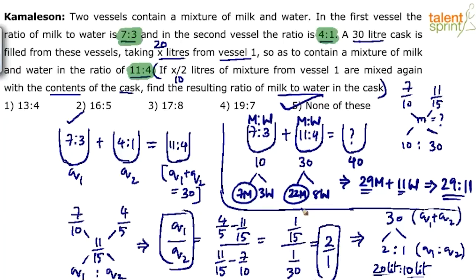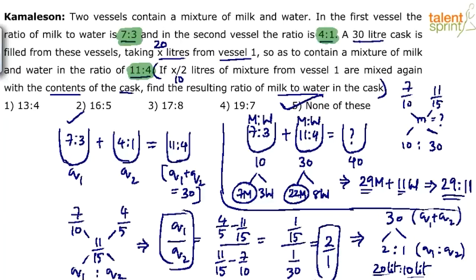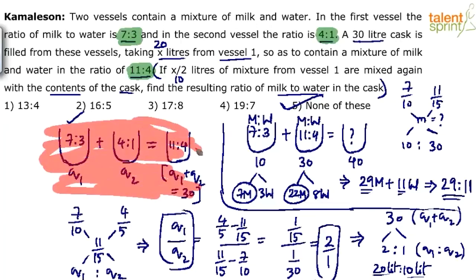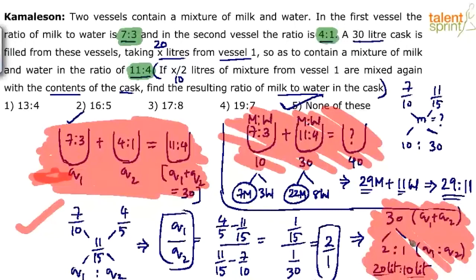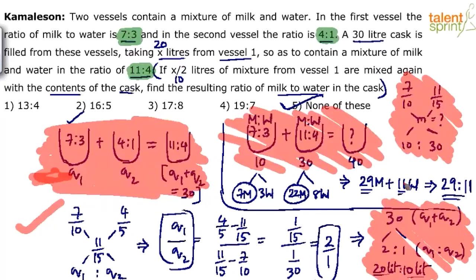The page may look loaded with text but the solution is actually straightforward. Cut down unnecessary steps — you don't need to draw all those diagrams in the exam. The two key steps are: first, apply the allegation rule to get the q1:q2 ratio (2:1, giving 20 and 10 liters); second, calculate total milk and water to get the final ratio 29:11.